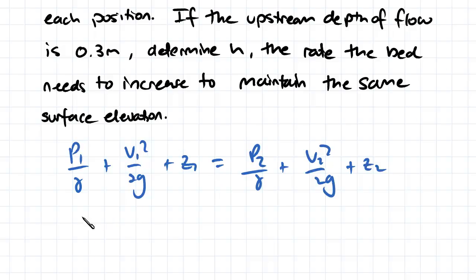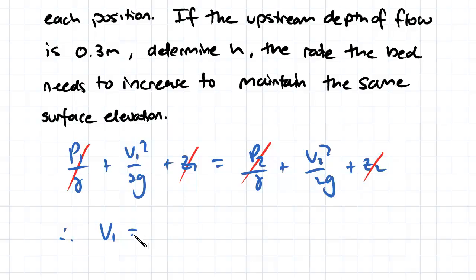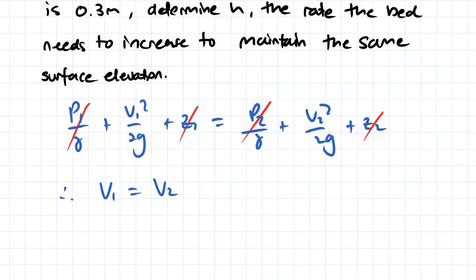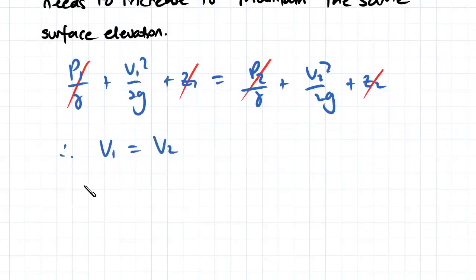If we consider a fluid particle on the top surface, the pressure must equal zero at both points. The distance from our datum is also constant because the fluid height is constant. Therefore, the velocity at point one must equal the velocity at point two.